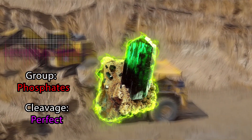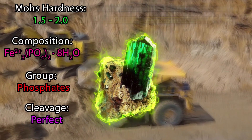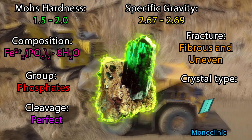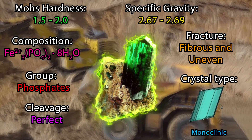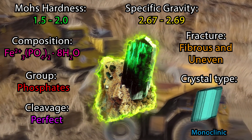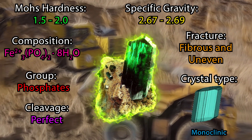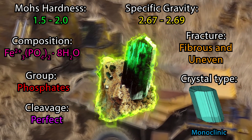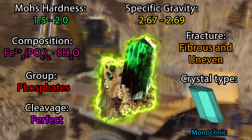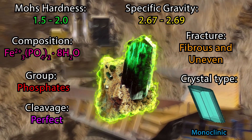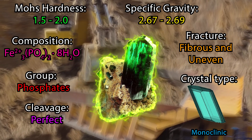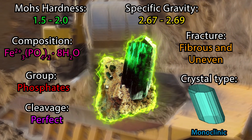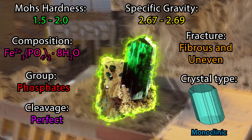In addition to this, Vivianite has a perfect cleavage, a Mohs hardness between 1.5 and 2.0, a specific gravity between 2.67 and 2.69. It has a fibrous and uneven fracture, and its crystal type is monoclinic prismatic.